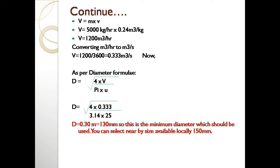Applying the diameter formula: D = √(4V / πU), and substituting all values, we get D = 0.130 meters, which is 130 mm. Therefore, for a requirement of 5000 kg per hour of steam, the minimum pipe size needed is 130 mm.